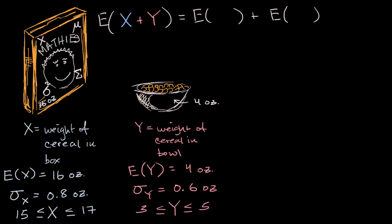So it would be the expected value of X plus the expected value of Y, and so it'd be 16 plus four ounces. In this case, this would be equal to 20 ounces.